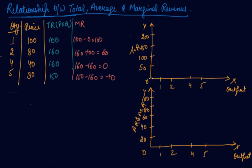So at unit 0, your total revenue is 0. At unit 1, your total revenue is 100. At unit 2, your total revenue is 160. At unit 4, your total revenue is 160. At unit 5, your total revenue is 150. So your total revenue curve will be this, this is your total revenue curve.